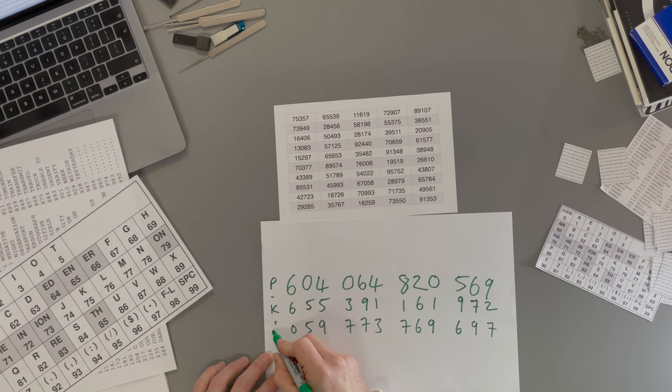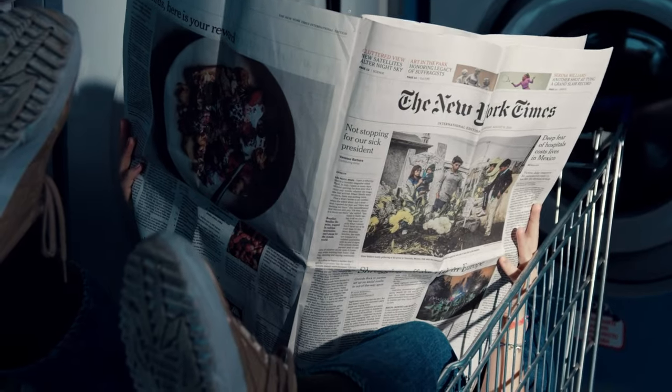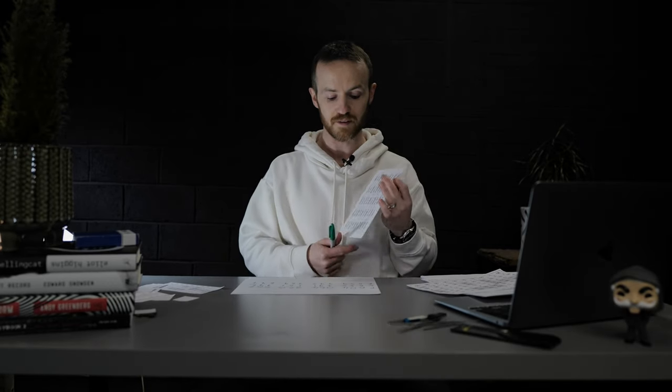There it is. You started off with your actual message, your plain text, then you subtracted the key, and that leaves you with the encrypted numbers. Those numbers you can send to your recipient any way you want. You could text them, you could put those in a WhatsApp, you could put those in a FaceTime call, you could send them by Morse code over the radio, you could take an ad in the New York Times on a specific day where the recipient knows to look in the New York Times and you could have those numbers.